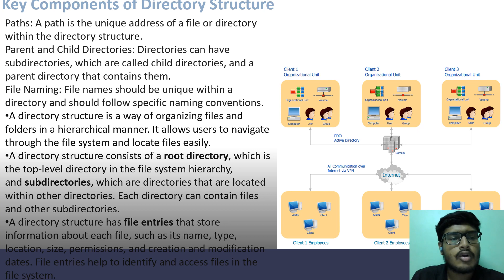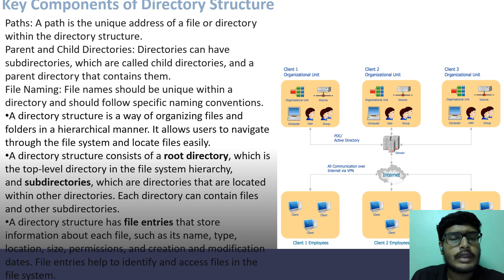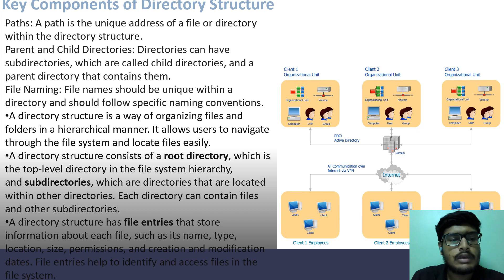Key Components of Directory Structures. Paths: A path is the unique address of a file or directory within the directory structure. Parent and child directories: Directories can have subdirectories, which are called child directories, and a parent directory that contains them. File naming: File names should be unique within a directory and should follow specific naming conventions.